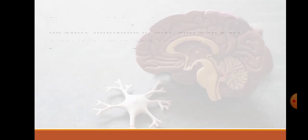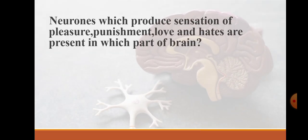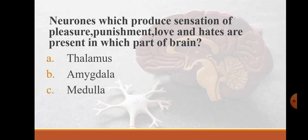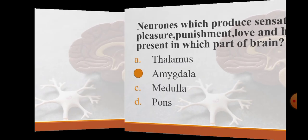Neurons which produce sensation of pleasure, punishment, love and hate are present in which part of brain? Thalamus, amygdala, medulla, or pons. Amygdala is the right answer. It is also involved in the feelings of fear and rage.